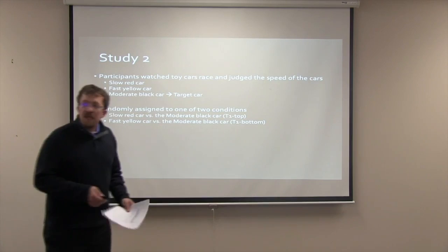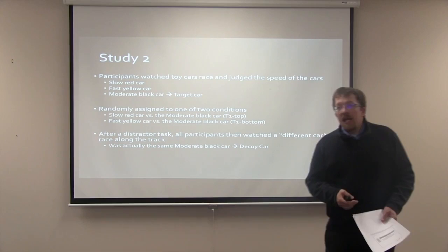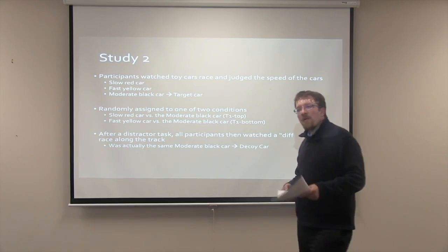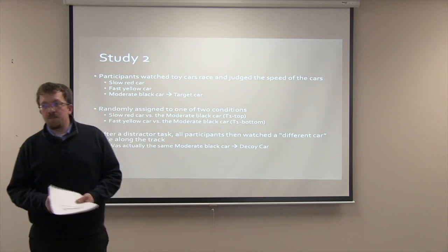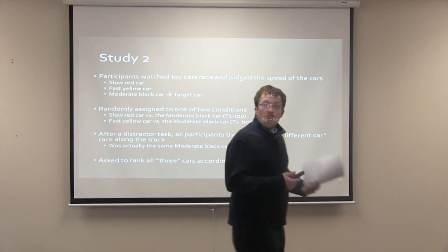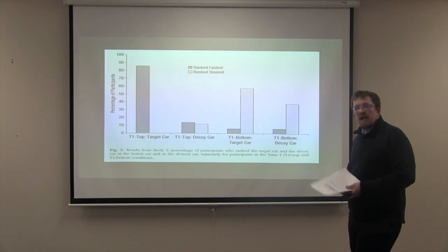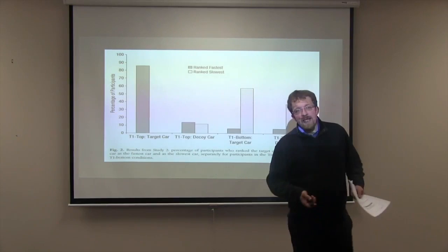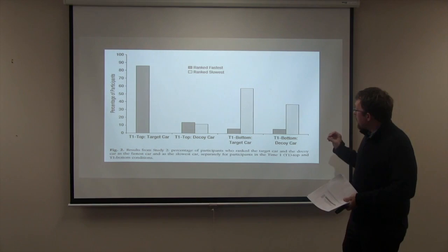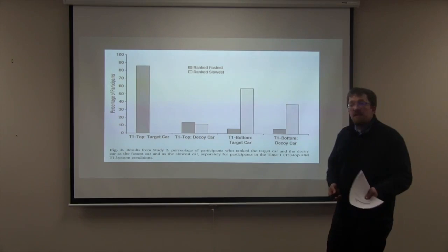After watching the two cars race, participants completed a distractor task and then watched an additional car race along the track. Although they were told this was a different car, it was actually the same moderate speed black car as before, which the researchers considered a decoy car. Participants were then asked to rank the three cars according to speed. As shown in the graph, when the moderate speed car was paired with the slower car in the T1 top condition, participants rated it as being the fastest. However, when the moderate speed car was paired with the fast car in the T1 bottom condition, participants rated it as being the slowest.